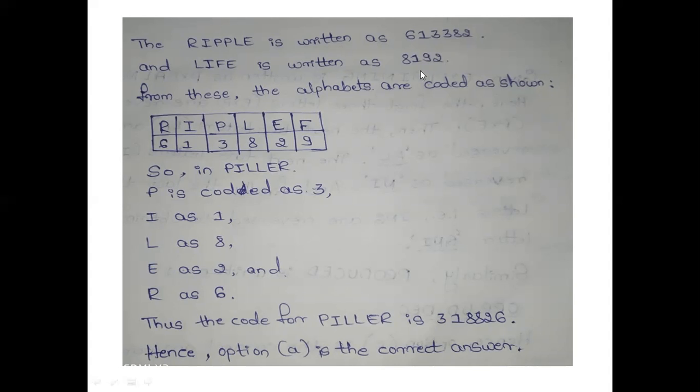So ripple, R is coded as 6. I is coded as 1. So ripple has I as 1, life has I as 1. So 1.